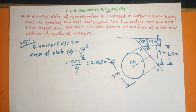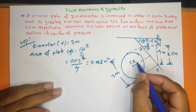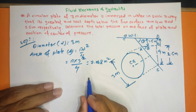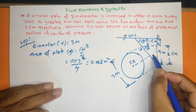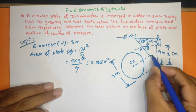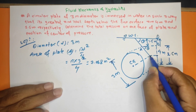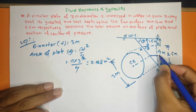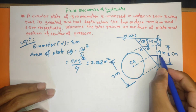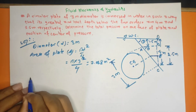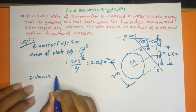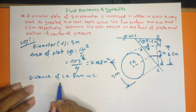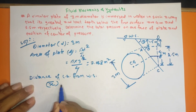This is the vertical distance of the centroid from the water surface, which we need to determine. This distance is denoted x̄.